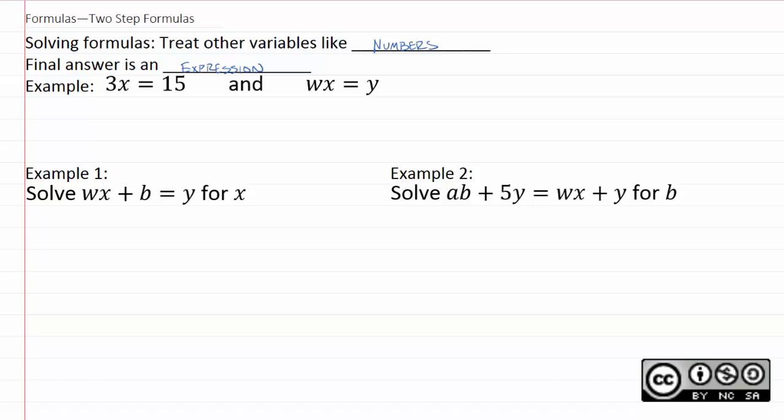And so, let's take a look at some examples. Now, 3x equals 15, this should be a very easy equation to you. We divide by 3, x equals 5, and we're all set.